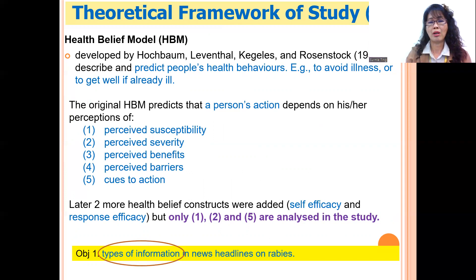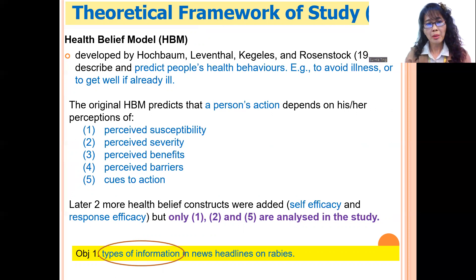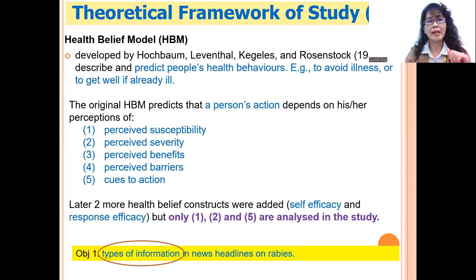Later, two more constructs were added to the framework, but in this particular study I only look at perceived susceptibility, perceived severity, and cues to action. This is because in a newspaper article, these are the three relevant types of information that usually appear and are included.